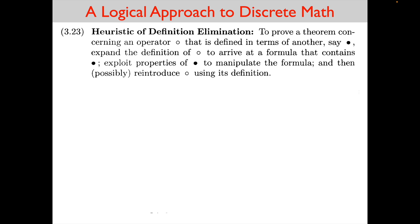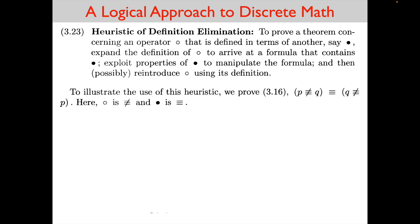Let's do an example of this heuristic of definition elimination — right out of the textbook A Logical Approach to Discrete Math. To illustrate, we prove 3.16: P not-equals Q equals Q not-equals P. Here the first operator is not-equals and the second operator is equals. We are going to use the proof technique metatheorem, starting with the left-hand side 'P not-equals Q'. The first step of the proof uses the definition of not-equals, 3.10, which says: P not-equals Q equals not (P equals Q).